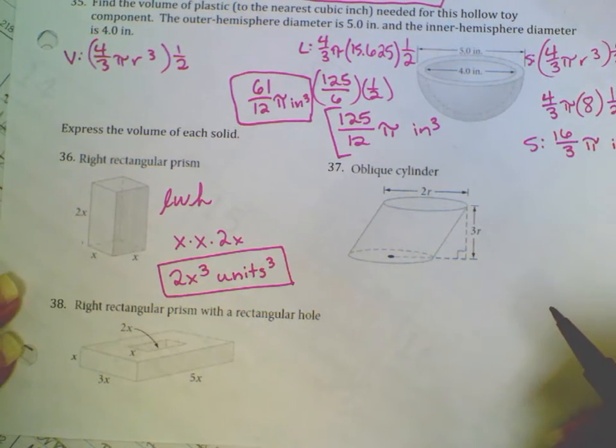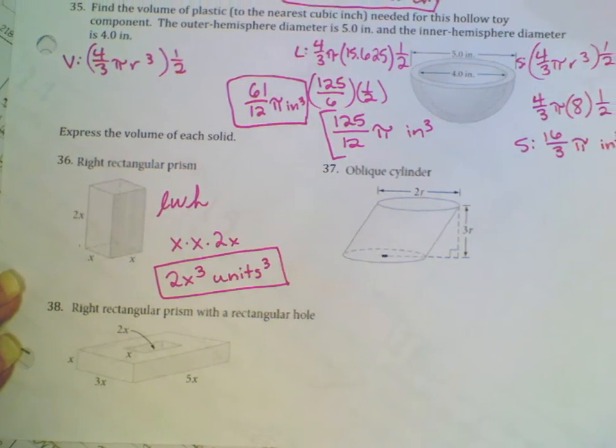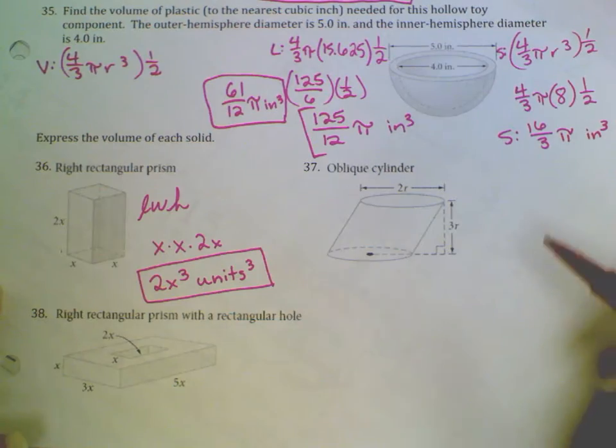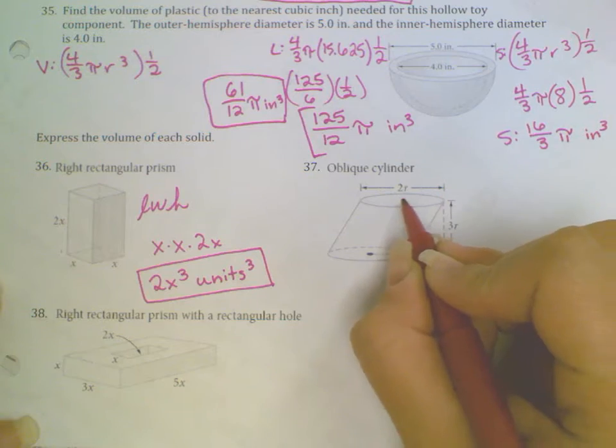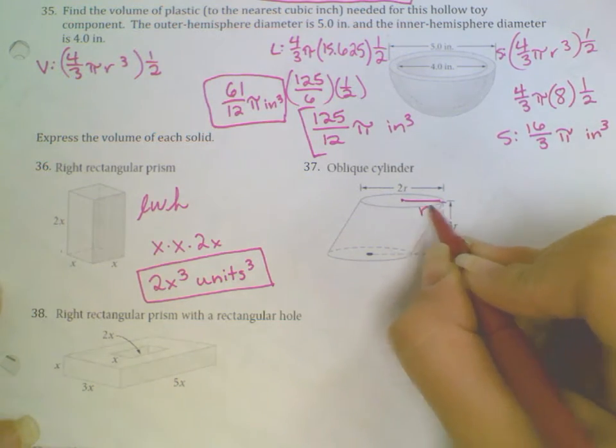For number 37, it says that it's an oblique cylinder, but it gives us the height, so we are good to go. It tells us also that the diameter is 2r, meaning that the radius is just r.